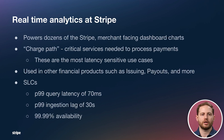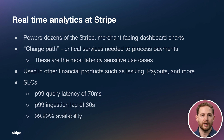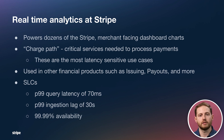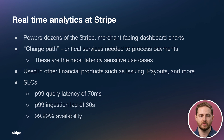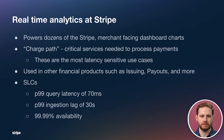Real-time analytics at Stripe is in a lot of areas. Some of the places our team powers are when you log in as a merchant, your dashboard charts will be powered by our system. The charge path — which is the payments that you see go through — as well as other financial products like issuing and payouts, take advantage of real-time analytics. And one thing these all have in common are stringent SLCs: a P99 query latency of 70 milliseconds, P99 ingestion lag of 30 seconds, and four nines of availability.